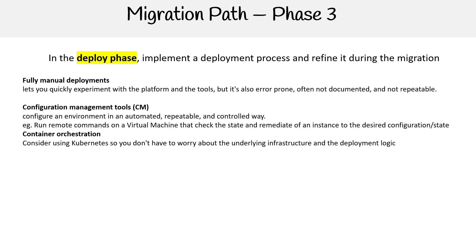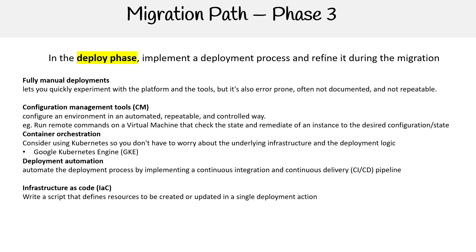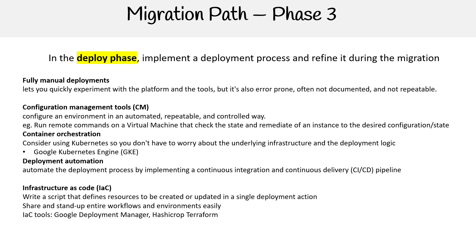You have container orchestration — consider using Kubernetes so you don't have to worry about the underlying infrastructure and deployment logic; you could use Google Kubernetes Engine for that. Deployment automation: automate the deployment process by implementing a continuous integration and continuous delivery pipeline. Infrastructure as code (IaC): write a script that defines resources to be created or updated in a single deployment action, and share and stand up entire workflows and environments easily. IaC tools here include Google Deployment Manager or HashiCorp Terraform — Terraform is an IaC tool that works across all cloud service providers.